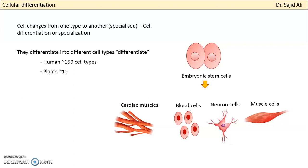Embryonic cells divide and change into different types. What types of cells will they become? Basically, cell types differentiate based on DNA. The cells that start from a given origin will be cells of that particular species.